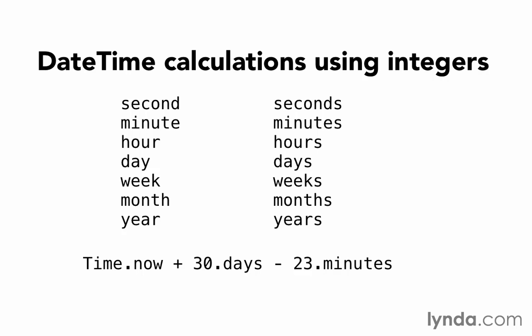So 30.days would return the number of seconds that make up 30 days. That's useful when we have a calculation, because we can do time.now plus 30.days minus 23.minutes, and it will return a datetime to us that's been changed by the appropriate number of seconds. It's much easier than actually working with those seconds themselves — you can just have something that's very readable, like this.